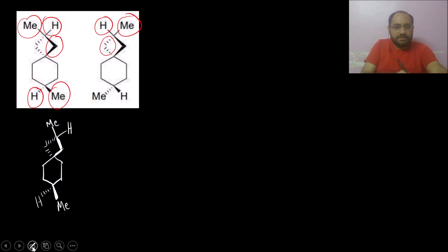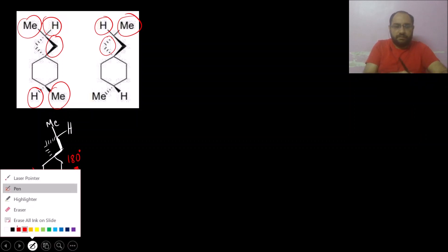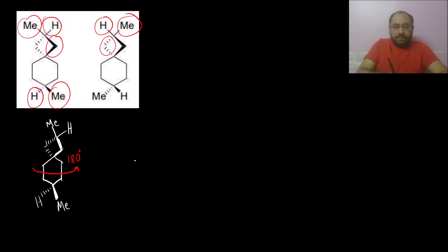Now what I can do is, this is a three-dimensional molecule, so I can rotate this 180 degrees. That means I am flipping this molecule. I will take this molecule and rotate it 180 degrees.